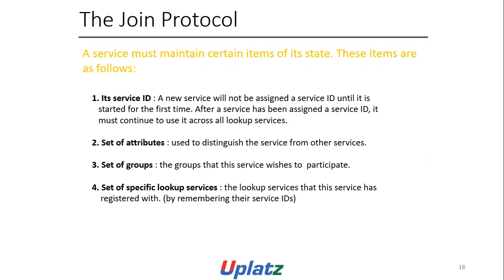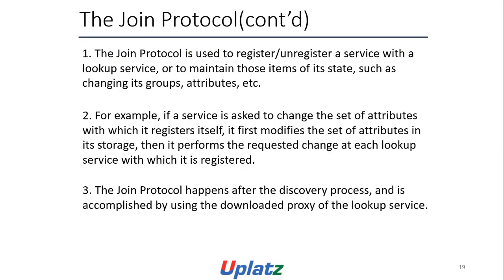Join protocol: a service must maintain certain items of state — its service ID (a new service will not be assigned a service ID until it is started for the first time; if assigned, it must continue to use it across all lookup services), the set of attributes used to distinguish services from other services, the set of groups the service wishes to participate in, and the set of specific lookup services by their service IDs. The join protocol is used to register and update a service with the lookup service — maintaining state such as changing its groups, attributes, etc. If a service changes its set of attributes, it modifies the set in storage, then performs the change at each lookup service with which it is registered. The join protocol happens after the discovery process and is accomplished using the downloaded proxy of the lookup service.